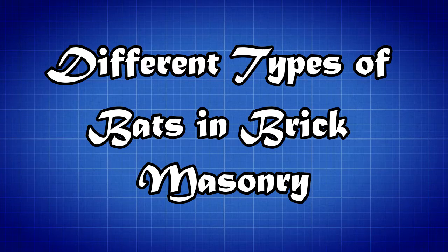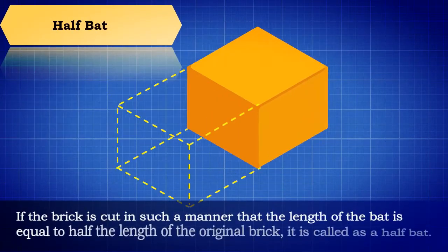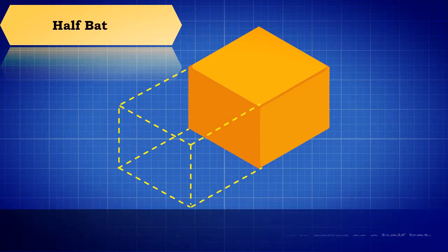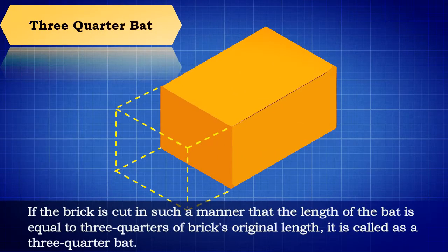Let us now discuss about different types of bat. Half bat: If the brick is cut in such a manner that the length of the bat is equal to half the length of the original brick, it is called as a half bat.